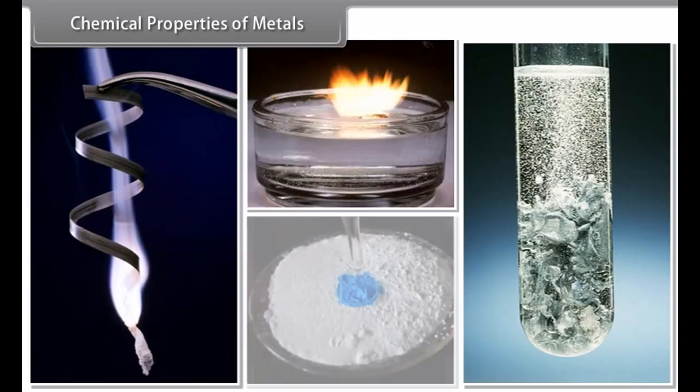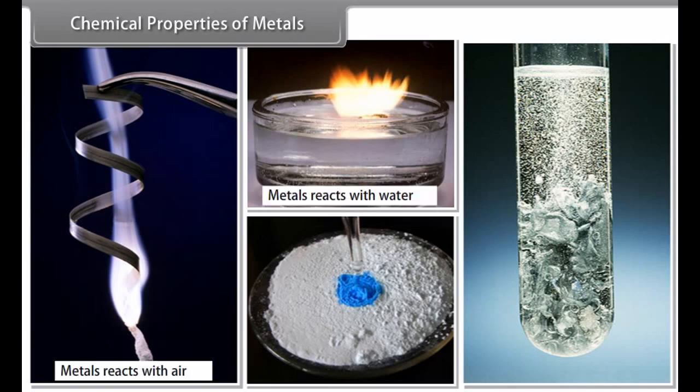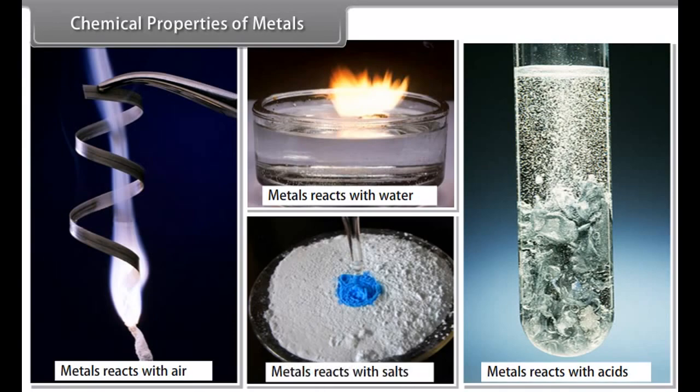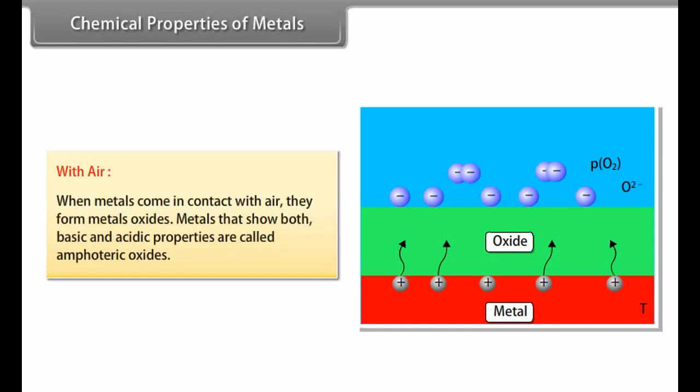Chemical properties of metals. Let us look at some chemical properties of metals. These properties include reactions of metals with other elements that is air, water, acids and other metal salts. With air: When metals come in contact with air, they form metal oxides. There are some metals that show both basic and acidic properties. Such metals are called amphoteric oxides.